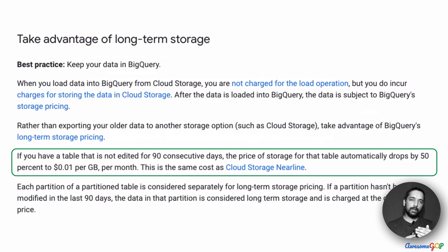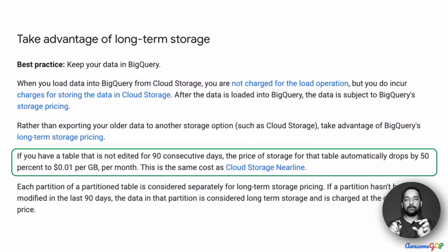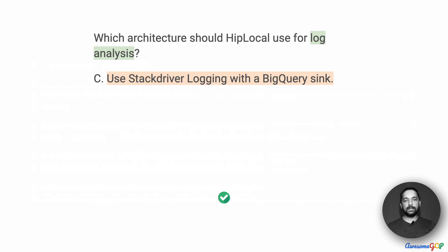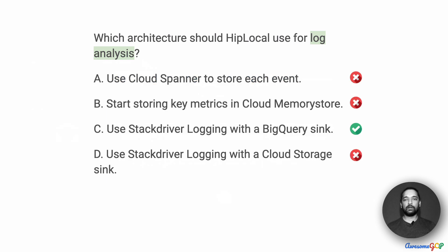Not only that, BigQuery is very suitable for long-term storage. In fact, if you do not use a BigQuery table for 90 consecutive days, the storage automatically drops in cost to become equivalent to what is offered by Cloud Storage Nearline. We can also have data archived or delete tables we are not going to be using anymore. So even for long-term storage, BigQuery is a great option. Considering all of that, Option C is the best option — to use Stackdriver Logging with a BigQuery Sync.